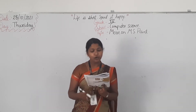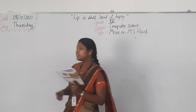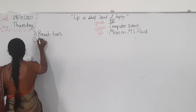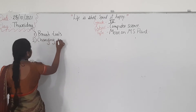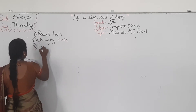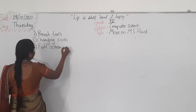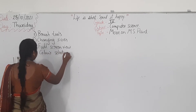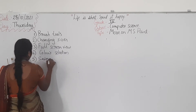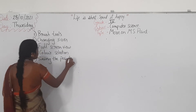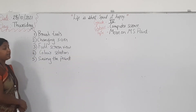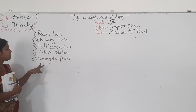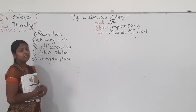Features of Paint. There are a few features of Paint. The first feature is brush tools. The second one is changing sizes. The third one is full screen view. The fourth one is color selection. And the fifth one is saving the paint. These are the main features of Paint, and today in this class we will learn in detail about these features.